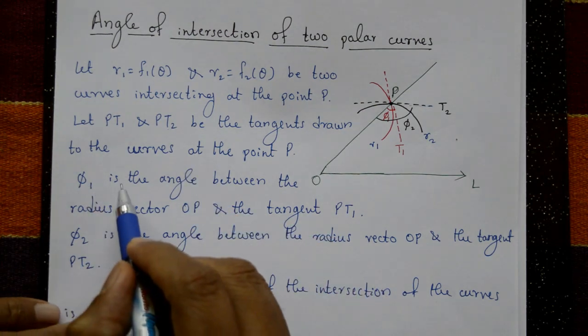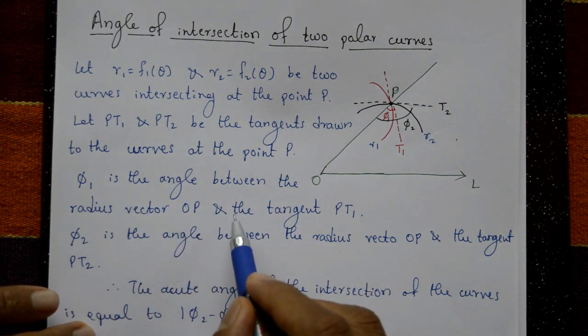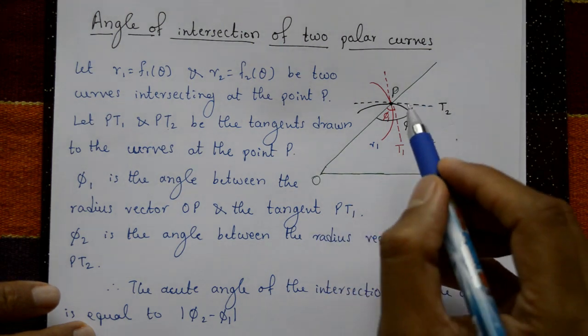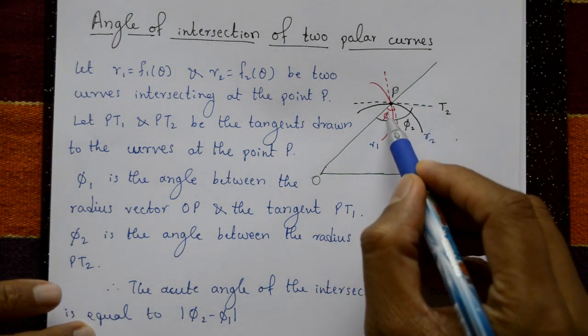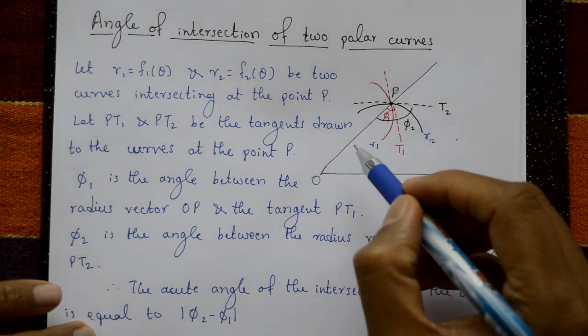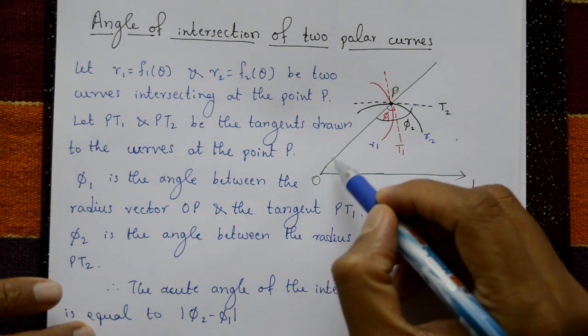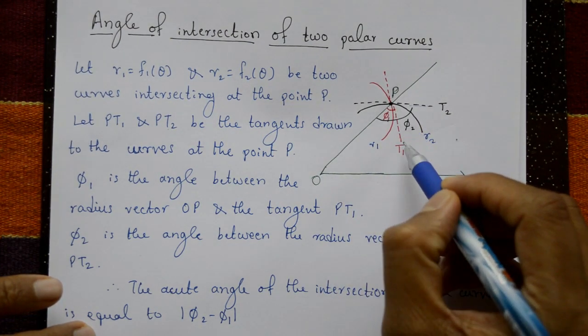φ1 is the angle between the radius vector OP and the tangent PT1.